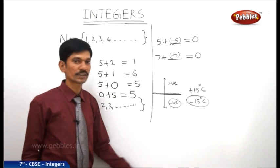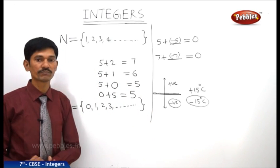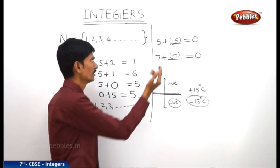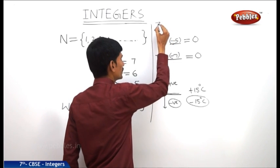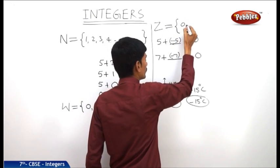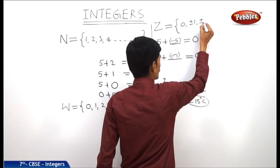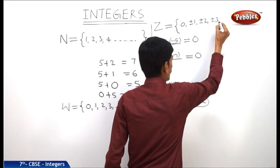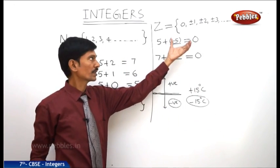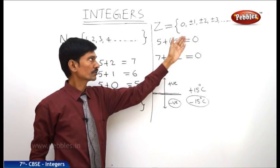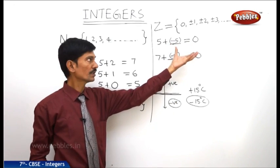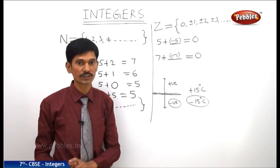If we include negative numbers to the set of whole numbers, we get a new number set called integers. The set of integers is denoted by Z or I, and equals: 0, plus or minus 1, plus or minus 2, plus or minus 3 and so on. In this set there are positive numbers and negative numbers together with 0. The positive numbers are called positive integers, the negative numbers are called negative integers, and 0 is neither positive nor negative.